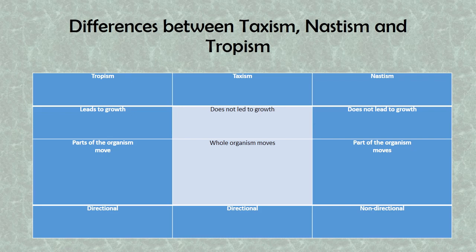Now we compare tropism, nastic movement, and taxism. In tropism, the response leads to growth, whereas in taxism and nastic movement, the movement does not lead to growth. In tropism, only part of the organism moves; in taxism, the whole organism responds or moves; while in nastic movement, only part of the organism moves. Tropism is a directional response, taxism is also a directional response, while nastic movement is a non-directional response.